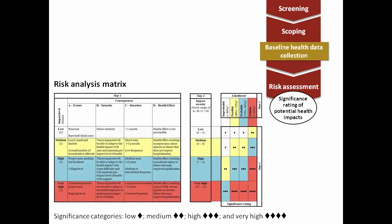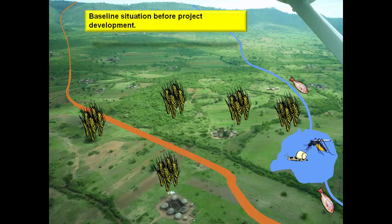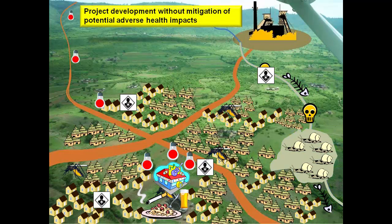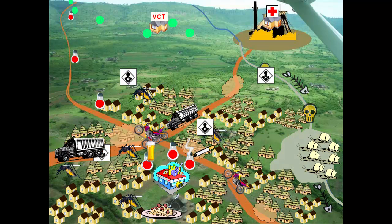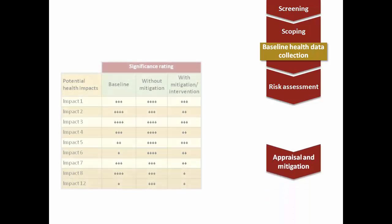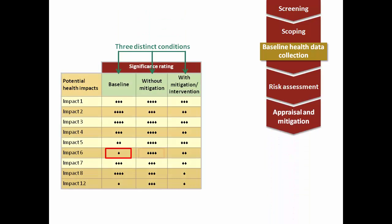The risk assessment comprises a significance rating of potential health impacts. A risk analysis matrix is employed and the rating of each potential health impact is performed for three distinct conditions: first, the baseline situation before project development; second, the developed project without mitigation of potential adverse health impacts; and third, the developed project including implementation of health interventions. Once the significance rating for these three distinct conditions is complete, the appropriate mitigation measures for each potential health impact becomes evident.